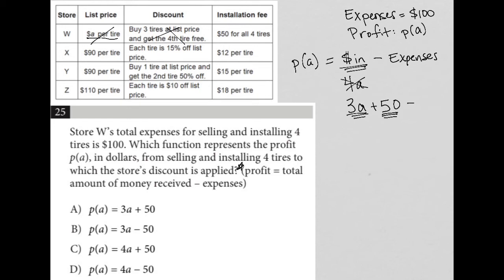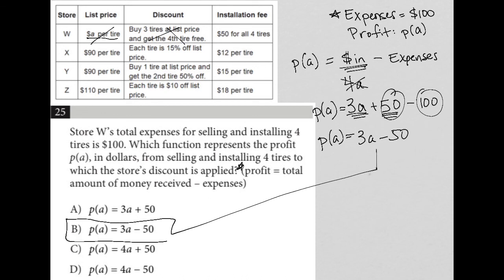I want to subtract from that the expenses, which we were told in the question are 100, so it's minus 100. P of A equals 3A plus 50 minus 100. When I simplify this, I have 50 minus 100, which is negative 50. This turns into P of A equals 3A minus 50. Therefore, the correct answer here is choice B.